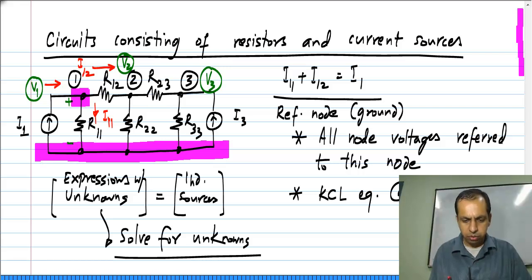And similarly, V2 is between node 2 and the reference node and V3 is between the node 3 and the reference node. I will use these variables V1, V2, V3 as the primary variables and write down my equations.